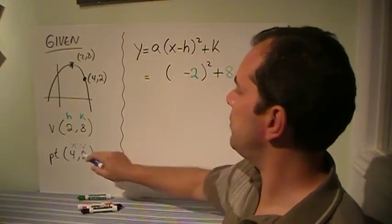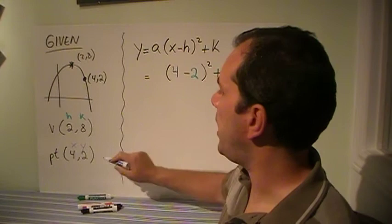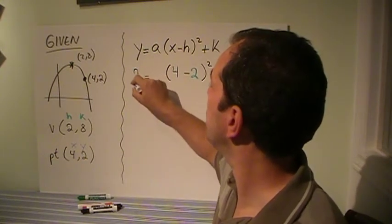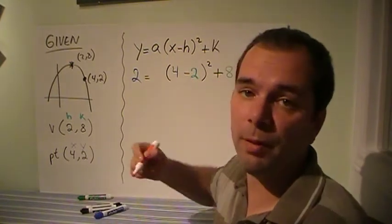So my x is 4, it goes right there, and my y is 2, so that's 2 over here.